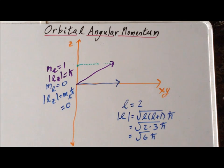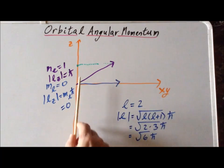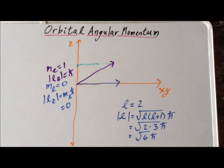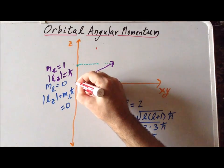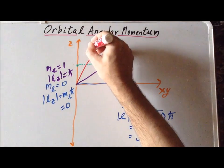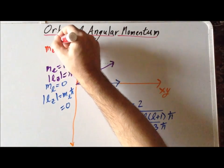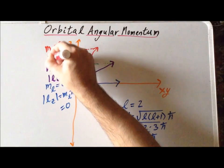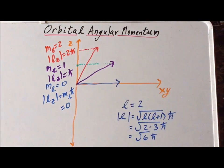Another way to visualize the projection is to think of this as light coming from the right, and the vector casts a shadow on the z-axis — and this is the length of the shadow. The orbital angular momentum vector could also have this orientation such that its projection corresponds to an m sub l value of positive 2, and therefore the magnitude of the z-component of the angular momentum is equal to 2 h-bar for this particular vector.